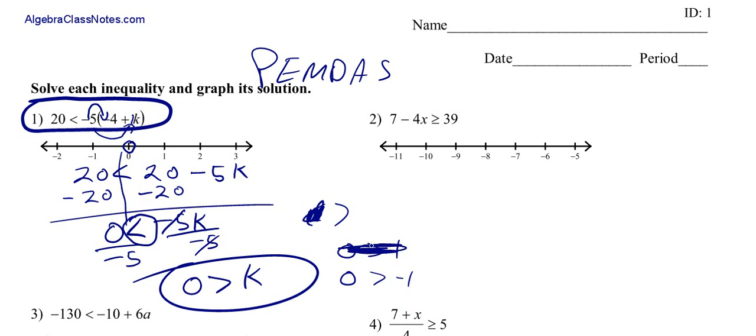So negative 1 is here, so this is the area I'm going to shade. I'll highlight it there for you. Alright, that's how we do number 1. Let's move on to another example.